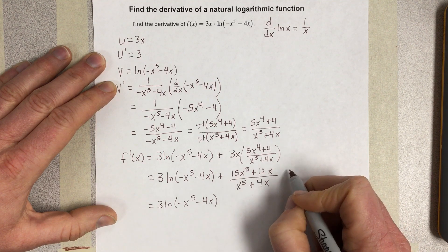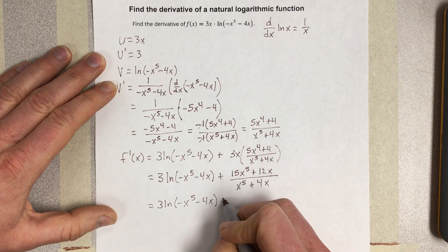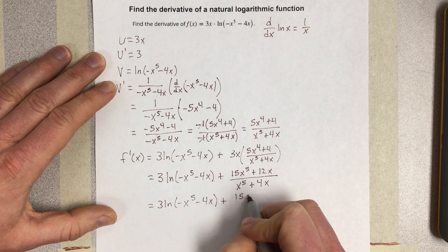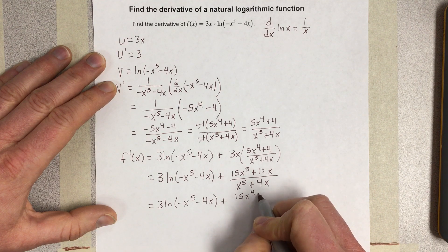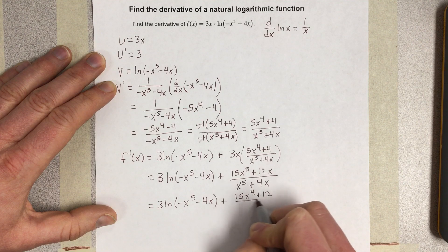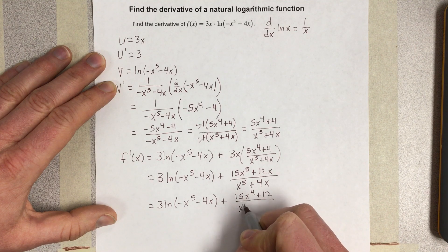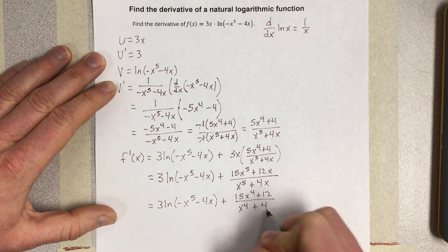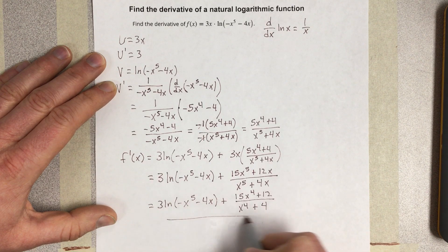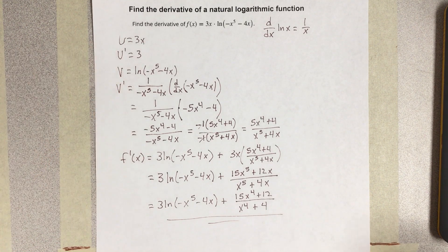I get x over x, so I'm going to have plus 15x to the 4th plus 12 all over x to the 4th plus 4. And that would be the final answer for the derivative.